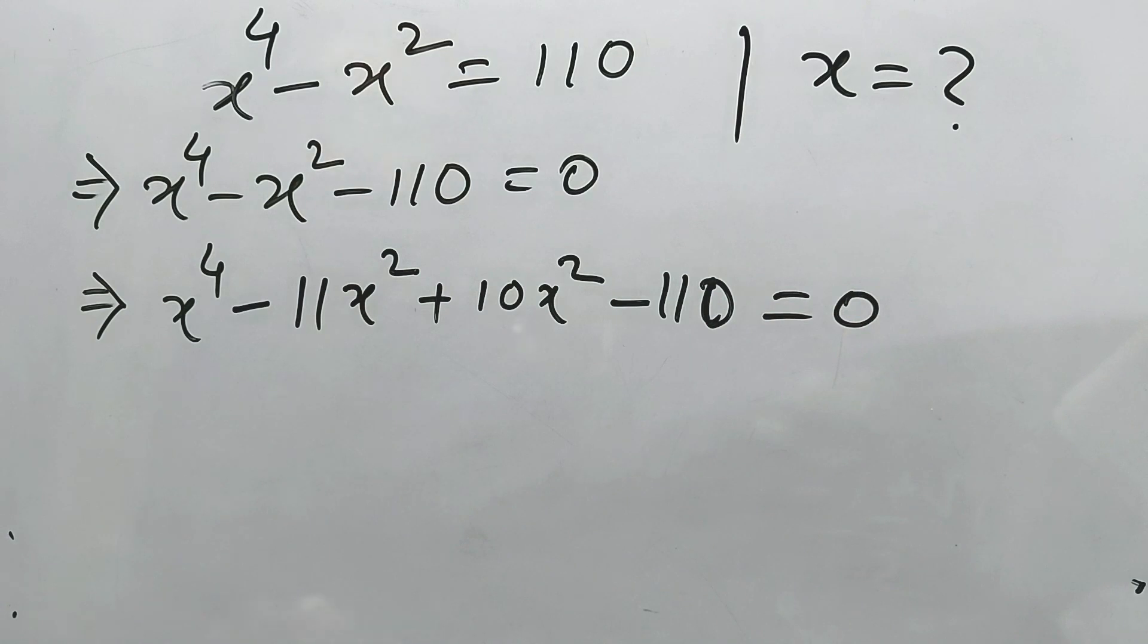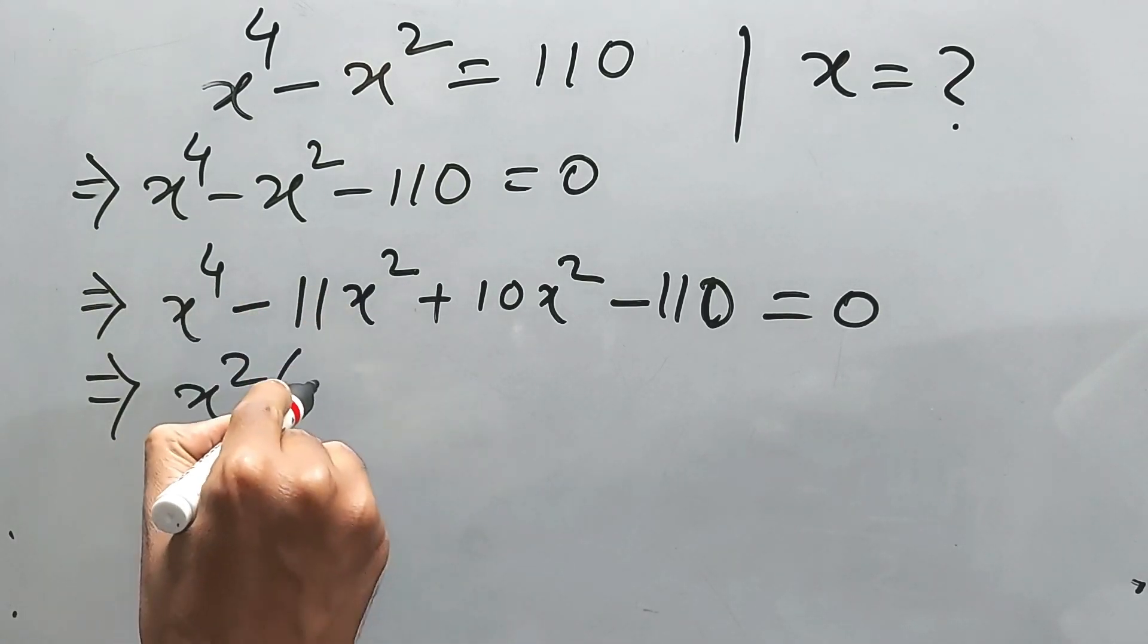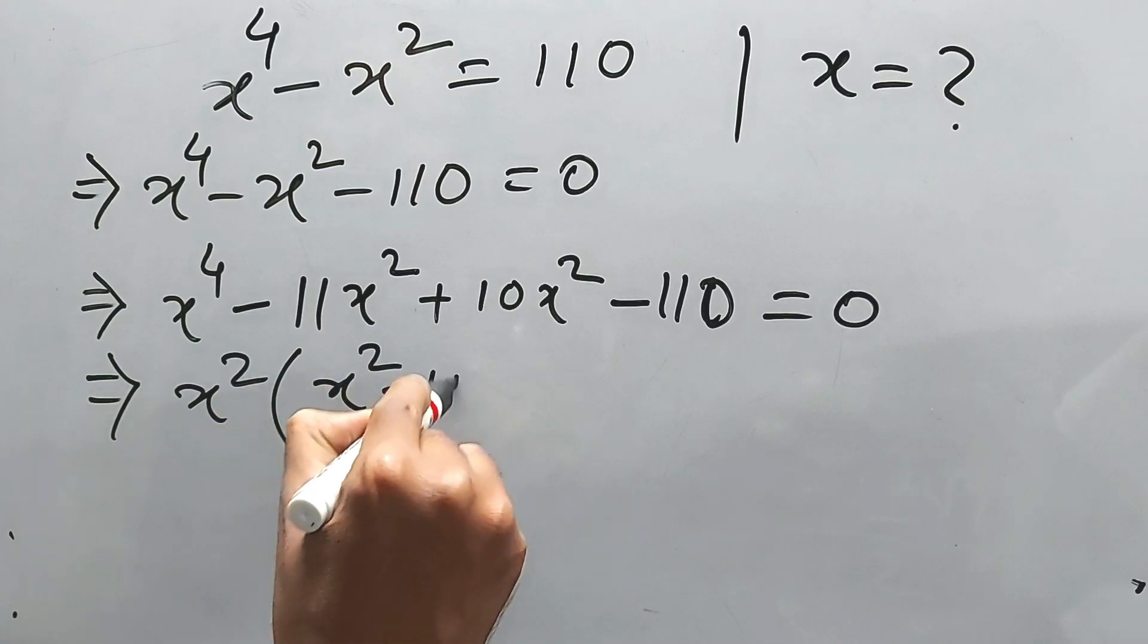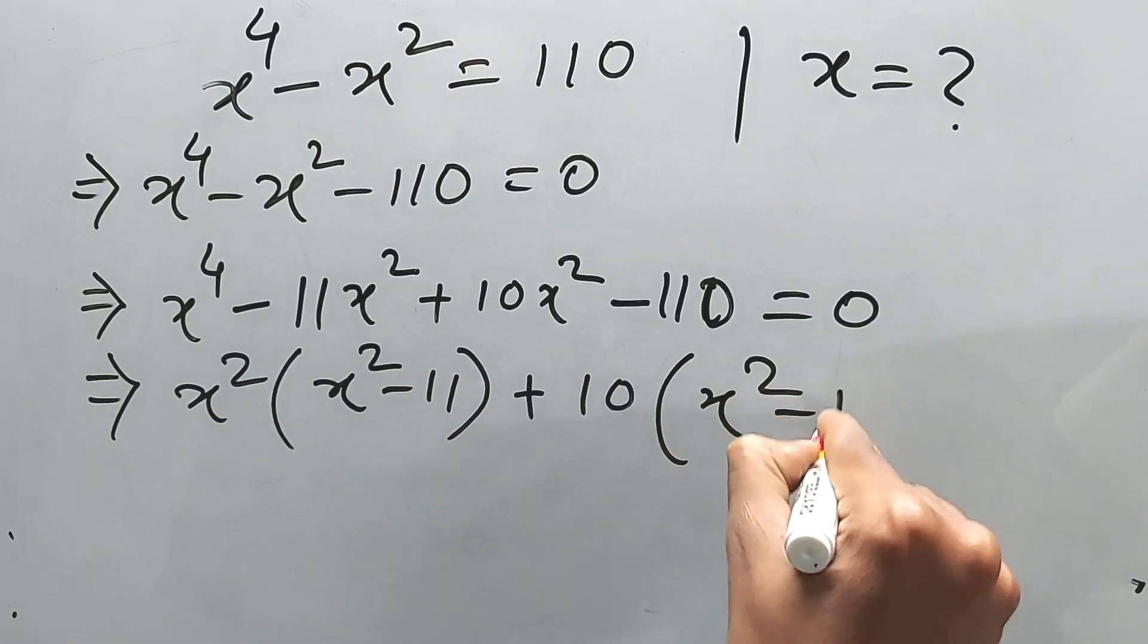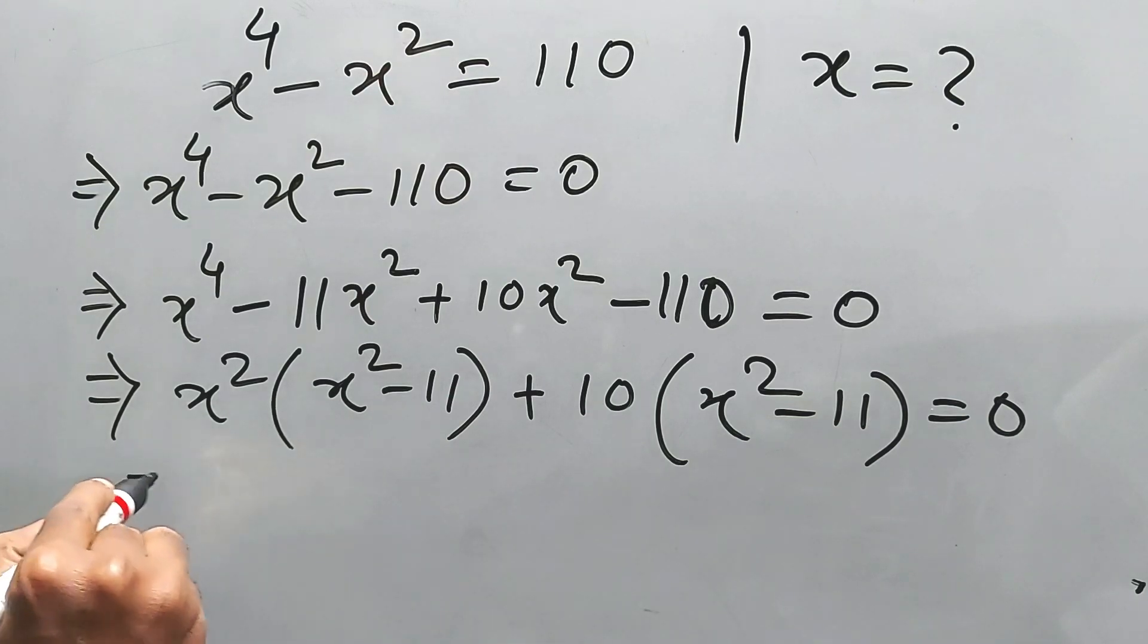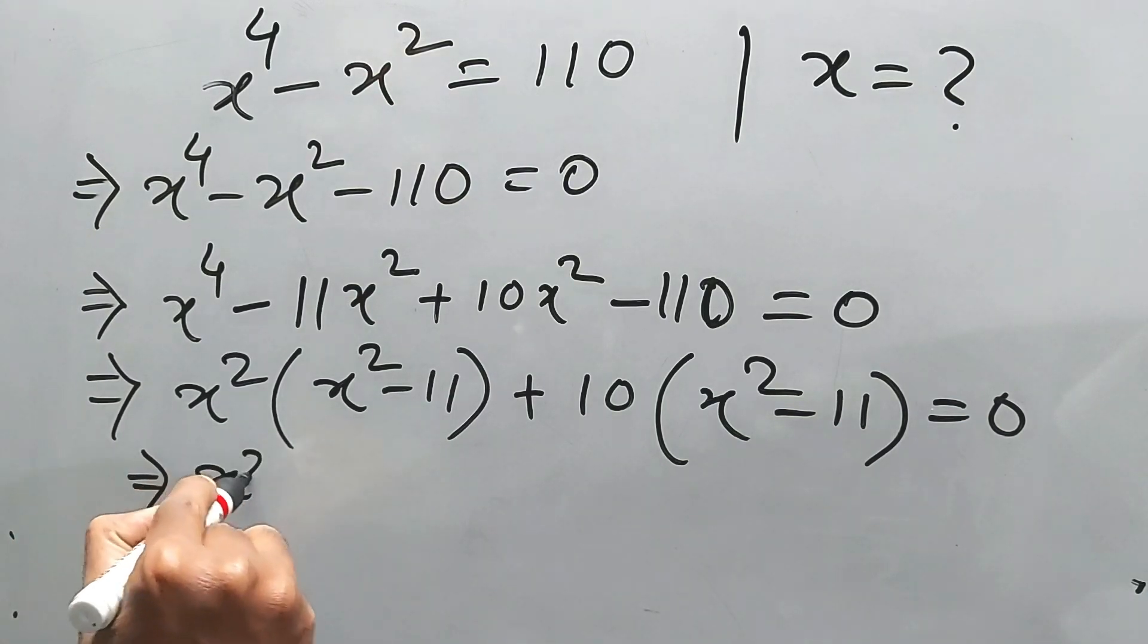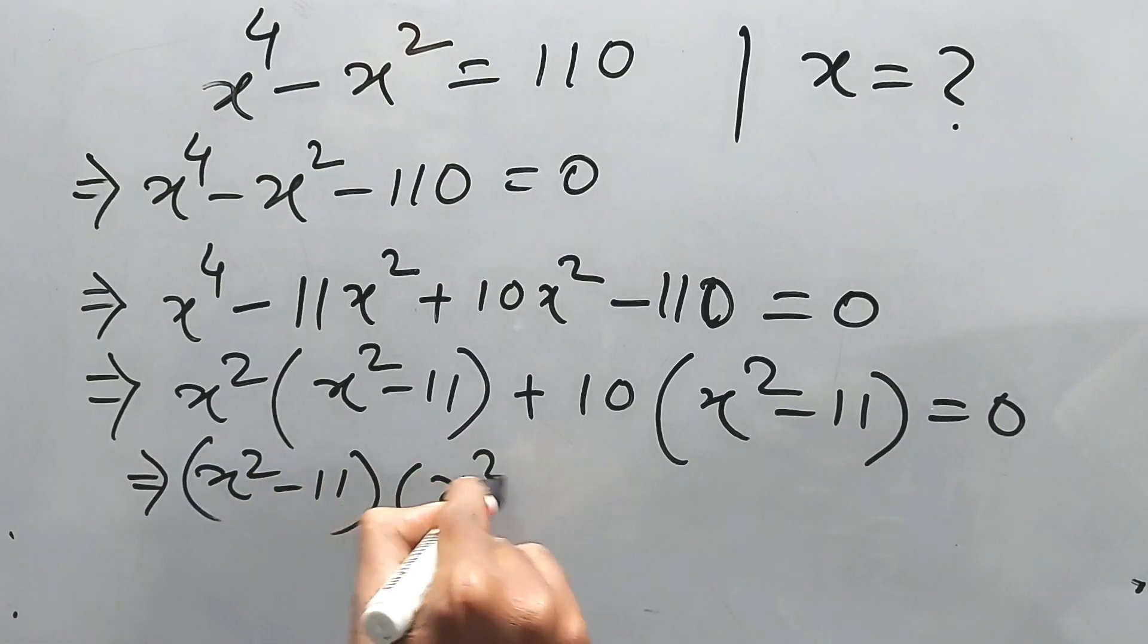Now if we take common for both sides, we'll get x squared from these two, and then x squared minus 11. Now again, x squared minus 11. See, this one will always match in case of middle term factor. You don't have to worry at all. So x squared minus 11 is one factor. Another factor will be x squared plus 10.